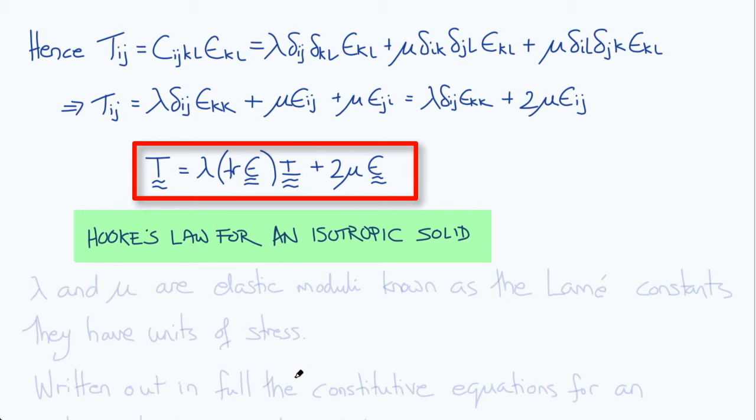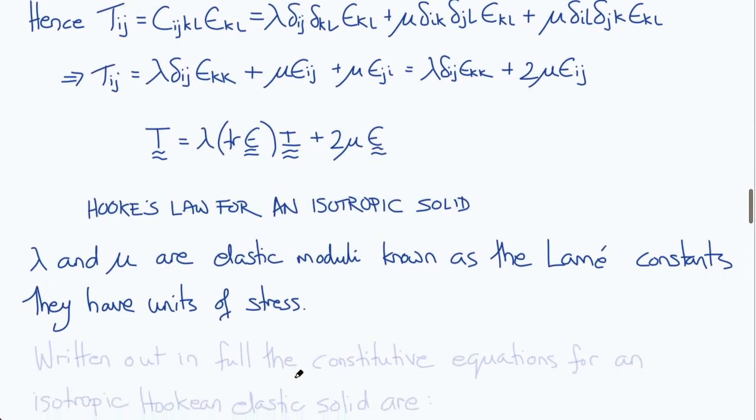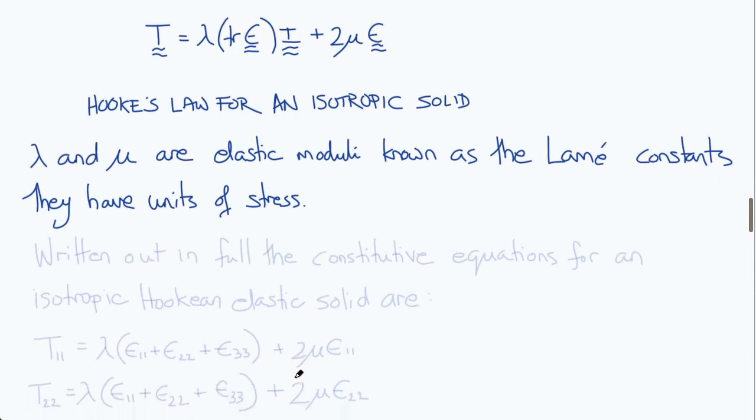Lambda and mu are elastic moduli that are known as the Lamé constants. Since strain is dimensionless, they have the same units as stress has. We can find the Lamé constants in terms of technical constants, such as the Young's modulus and Poisson ratio, and we'll do that next time.